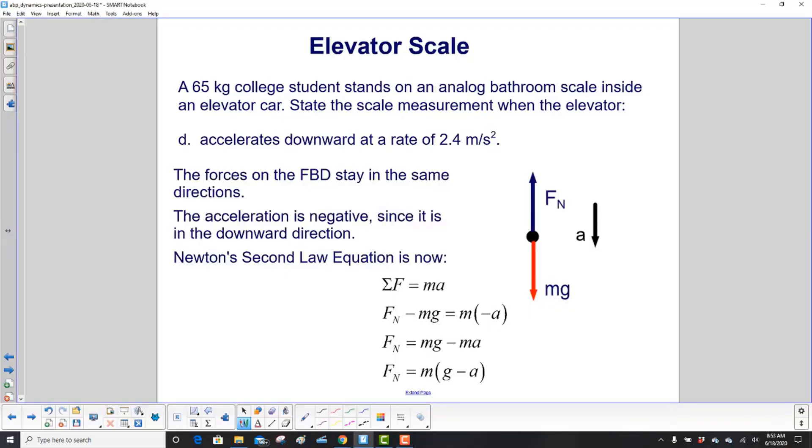Now we're accelerating downward at a rate of 2.4 meters per second squared. So the free body diagram, the directions stay the same. Normal, the scale is still pushing up on the student. mg is still pulling the student down. But the acceleration is in the down direction. And that shows up right here.